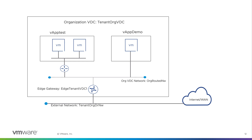The external network provides internet or WAN connectivity to the organization through an edge gateway, which is configured by a service provider. A tenant organization administrator can create two types of vDC networks: isolated network and routed network.